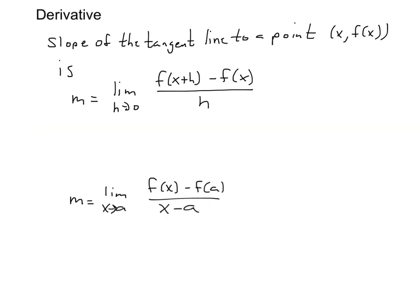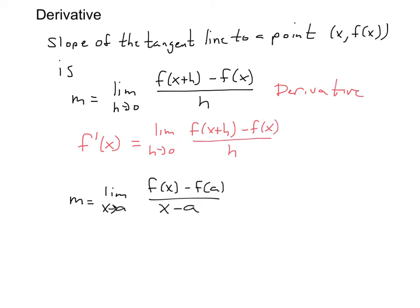Now we get to the idea of the derivative. The slope of the tangent line at the point (x, f(x)), using the last formula, is the limit as h approaches 0 of f(x plus h) minus f(x) over h. This limit is also called the derivative. The notation we use is f prime of x — f with a little prime mark — equals the limit as h approaches 0 of f(x plus h) minus f(x) all over h. That is the derivative.